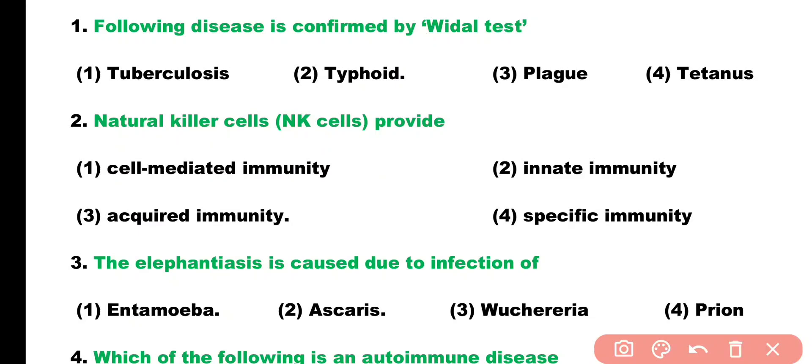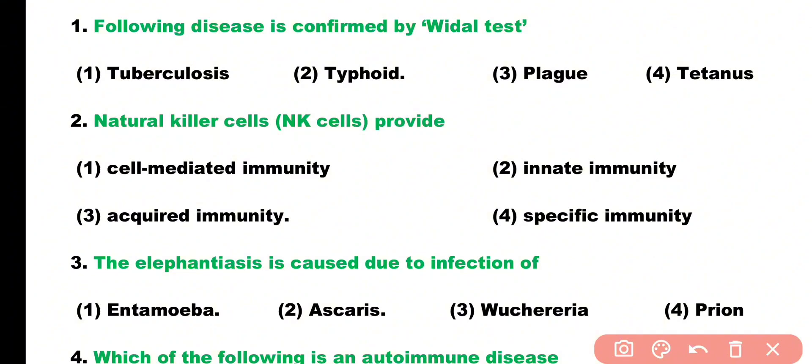Question number two: natural killer cells provide which type of immunity? Options: cell-mediated immunity, innate immunity, acquired immunity, specific immunity. Correct answer is option two — natural killer cells provide innate immunity.